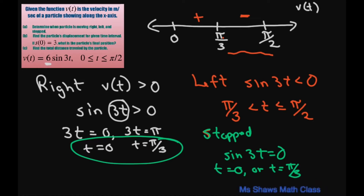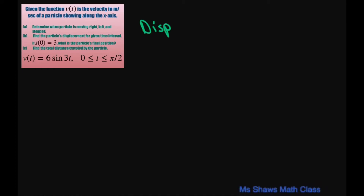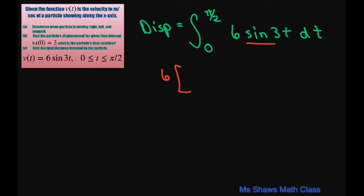Now we have to find the displacement. All you do is take the integral from zero to pi divided by 2 of 6 sine of 3t dt. Integrating, this equals 6 times negative one-third cosine of 3t, evaluated from zero to pi divided by 2.